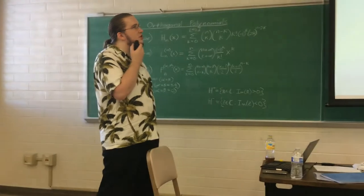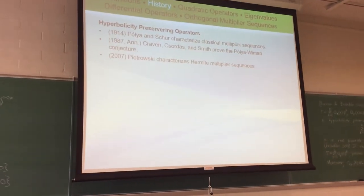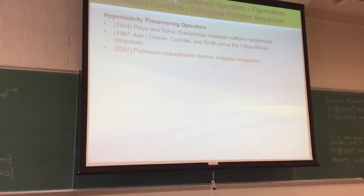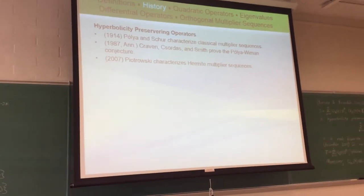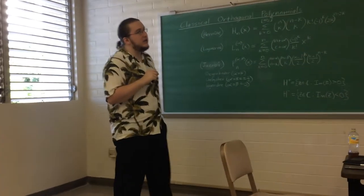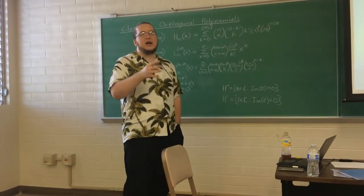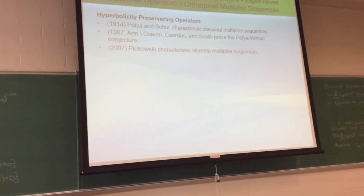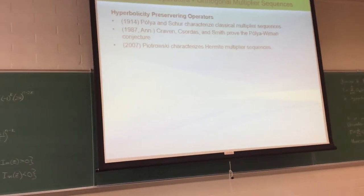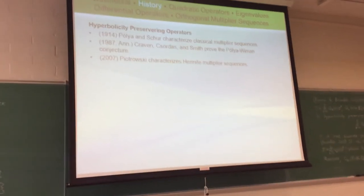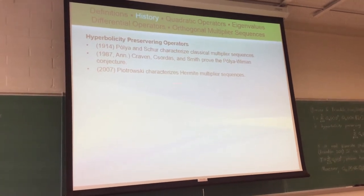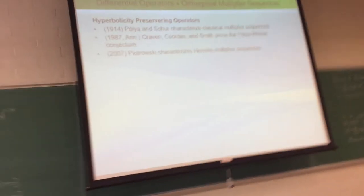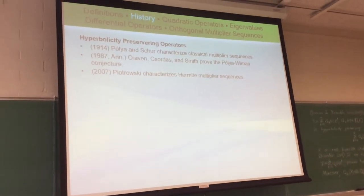Craven, Csordas, and Bleeker went on to do many more papers. In particular, it was shown that within the Laguerre-Pólya class, if the Taylor series coefficients γ_k are increasing, then you must have type greater than 1. Using these characterizations, Petrowski in 2007 completely characterized Hermite multiplier sequences — a second demonstration of a complete characterization — relating back to the Laguerre-Pólya class.